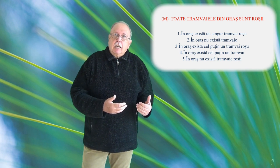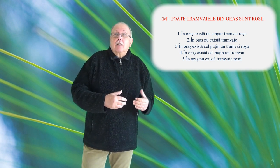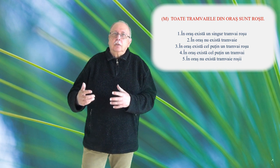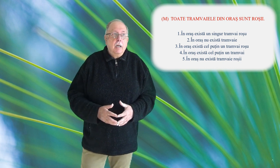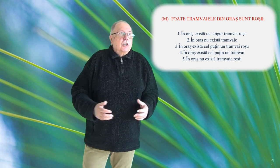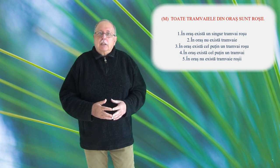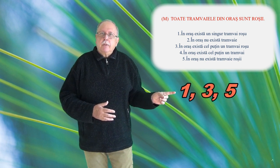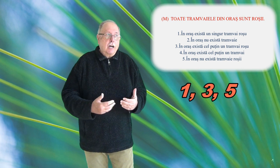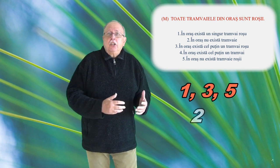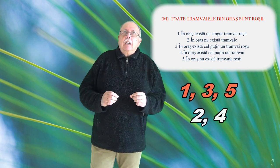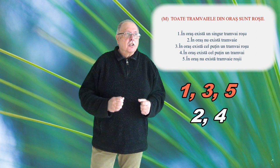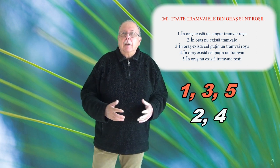Omul este mincinos și decât o spune ceva minte. Așa că avem o afirmație despre care știm că e o minciună, cea pe care o vedeți, și cele cinci afirmații pe care le vedeți numerotate și trebuie să găsim care este cu siguranță adevărată. Să numim în cele ce urmează afirmația toate tramvaiele din oraș sunt roșii, afirmația M de la minciună, pentru că știm că este o minciună. Dacă citim afirmațiile de la 1 până la 5 cu atenție, le putem clasifica în două categorii. Afirmațiile 1, 3 și 5, care vorbesc despre culoare, fac referire la culoarea roșie, și afirmațiile 2 și 4, care nu spun nimic despre culoare, ci se referă la existența sau non-existența tramvaielor în oraș.